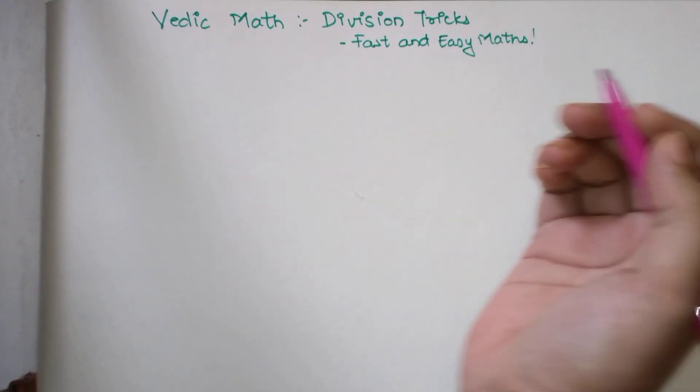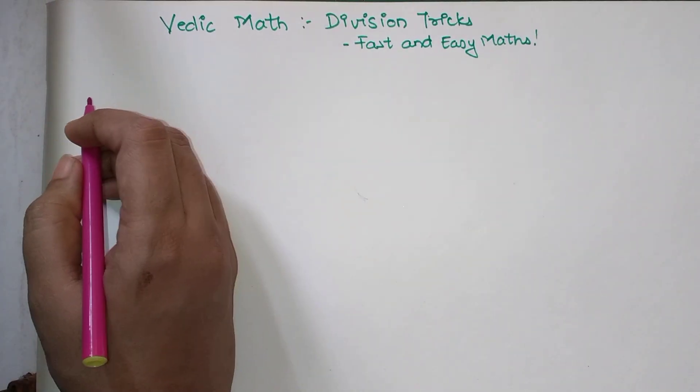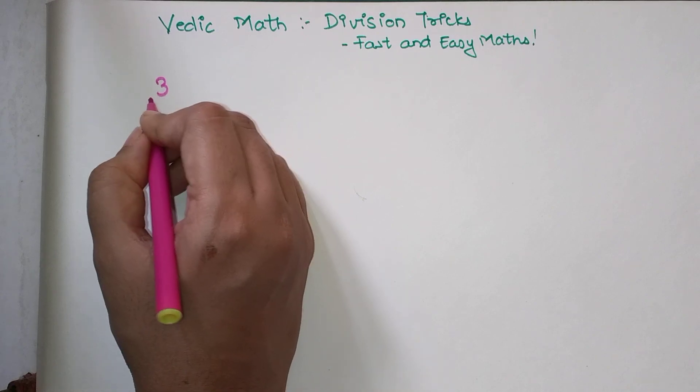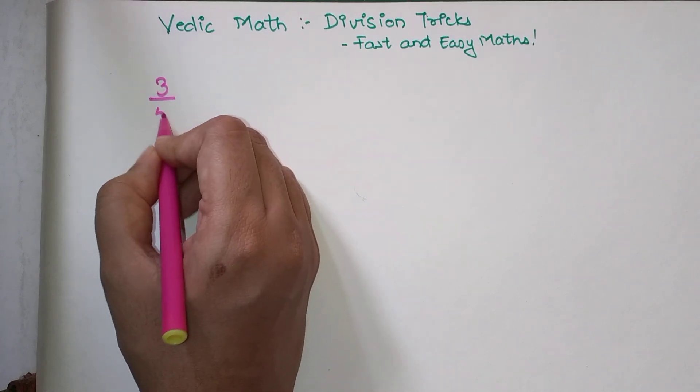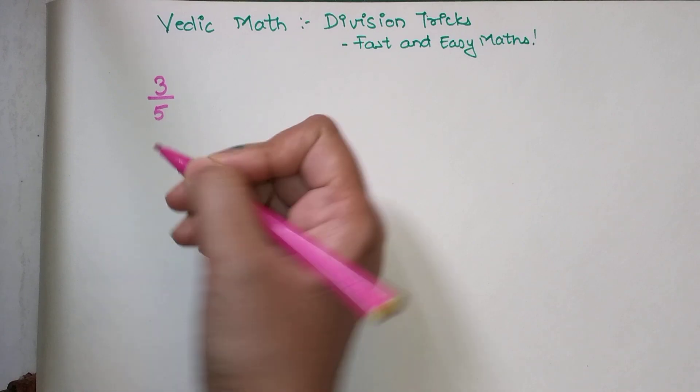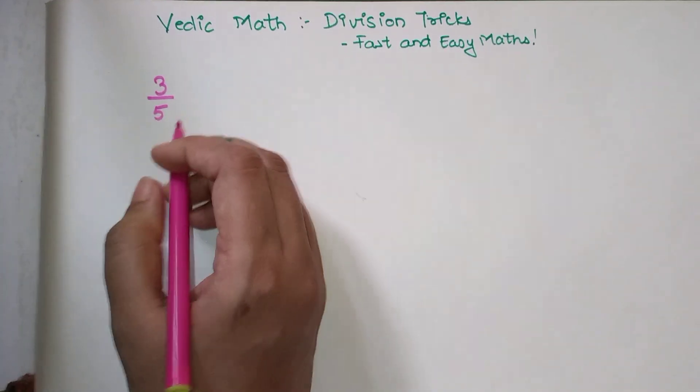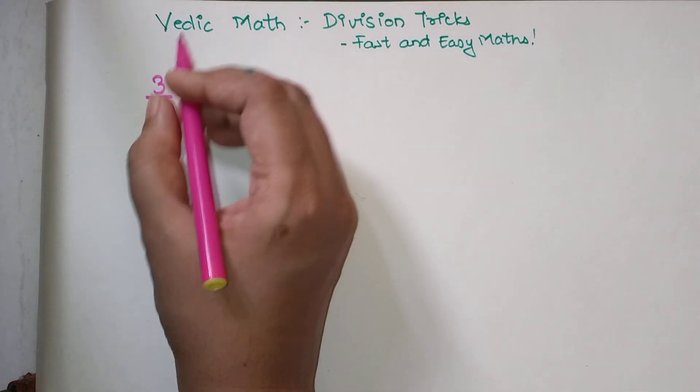Let's see how this trick works. Imagine you had to divide 3 by 5. I know this is a small example, but I'm using this to explain the trick.